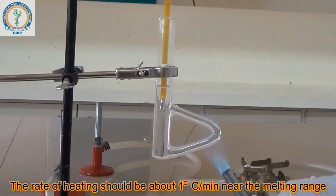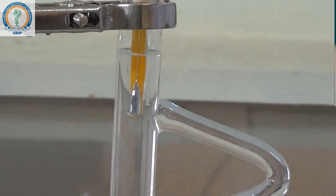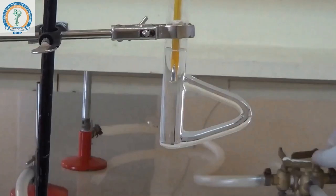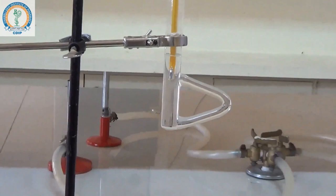We are reaching the temperature of 100 degrees centigrade. It is starting to melt, and the temperature reaches further. It is completely melted. Note down the temperature of 121 degrees centigrade, which is the actual melting point of benzoic acid.